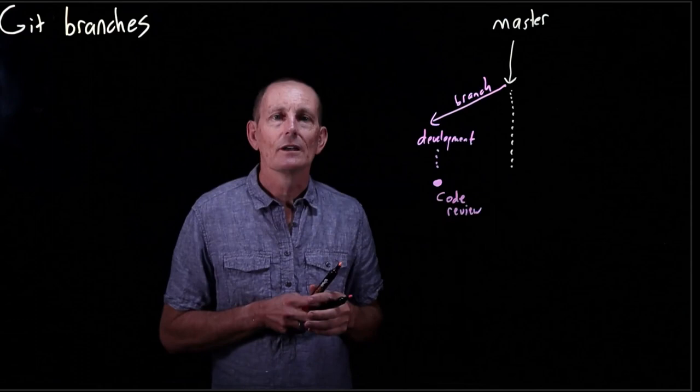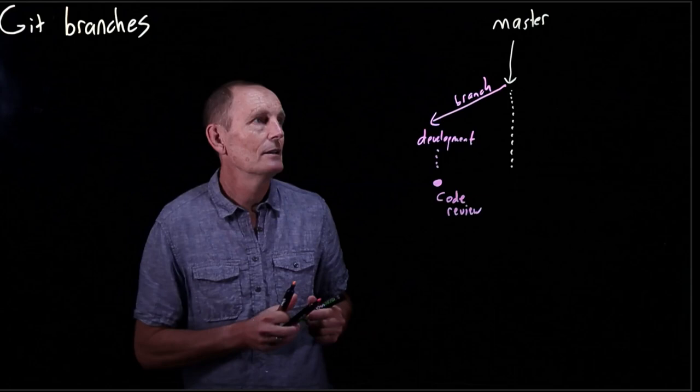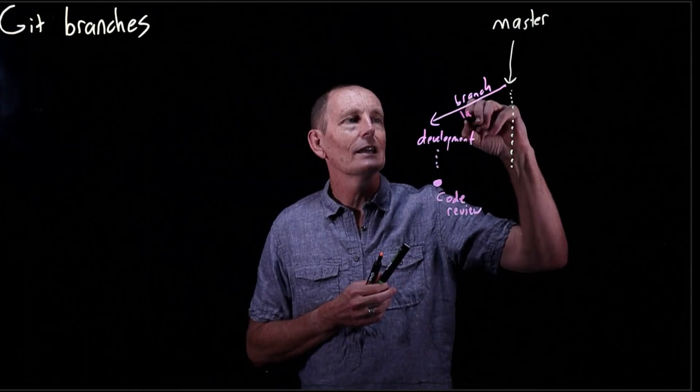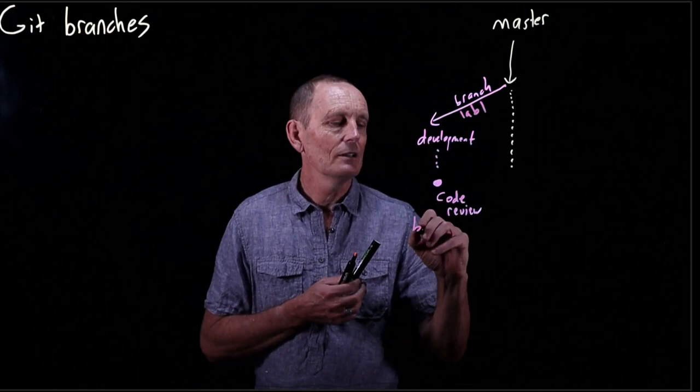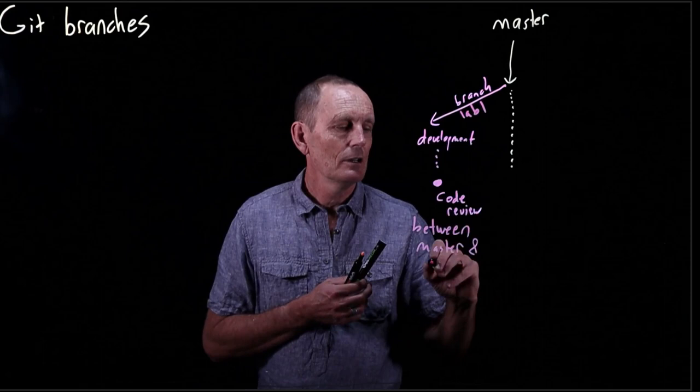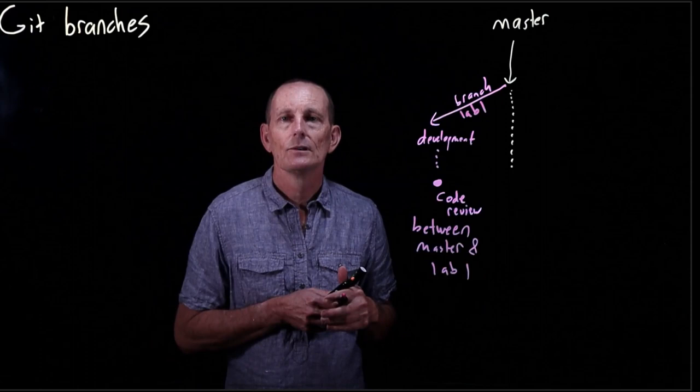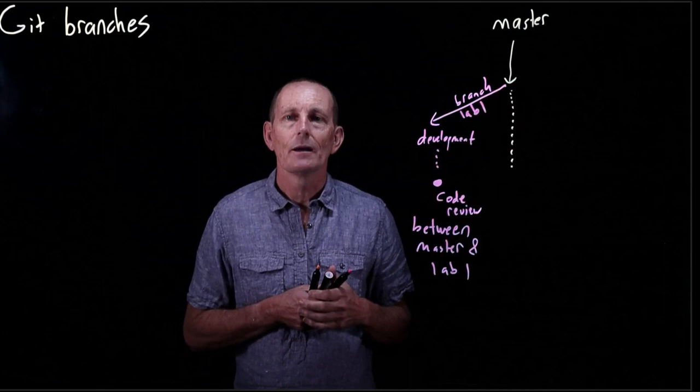What would we be reviewing? Well, we would be reviewing the difference between, let's call this branch lab one. So this is branch lab one. We do a code review between master and lab one, right?